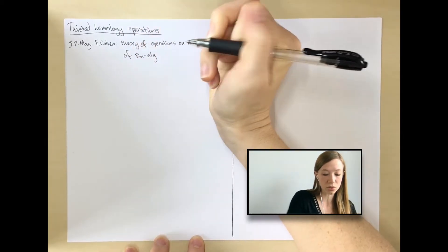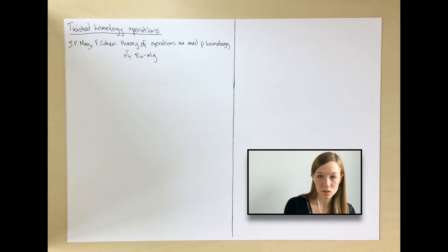They worked with a couple of distinguished operations, usually known as Dyer-Lashof operations. When n is finite you also need a Browder bracket, and they show that these operations generate all homology operations and give a description of the homology of a free E_n algebra in terms of these operations.